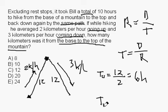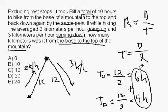The time for the way down equals the distance, 12, divided by the rate, 3, which equals 4 hours. Well, look at this. 4 hours going down, 6 hours going up, gives us a total of 10 hours, which is what the question says it took.